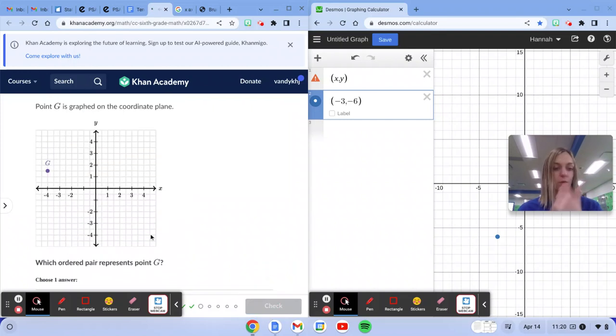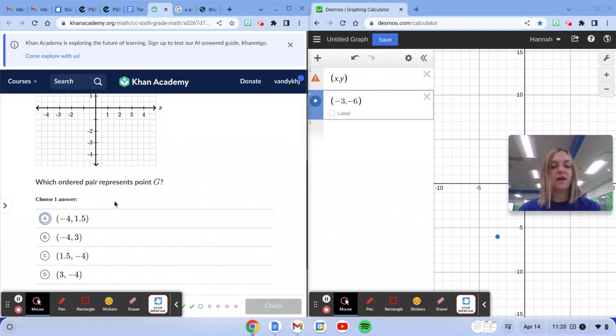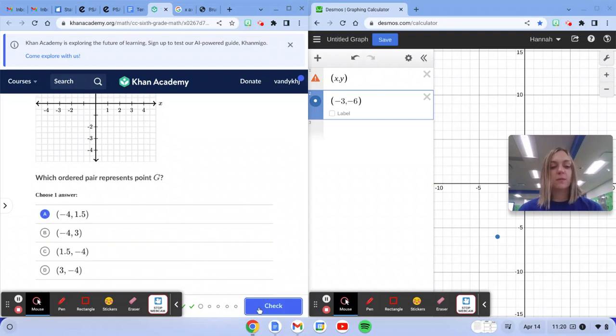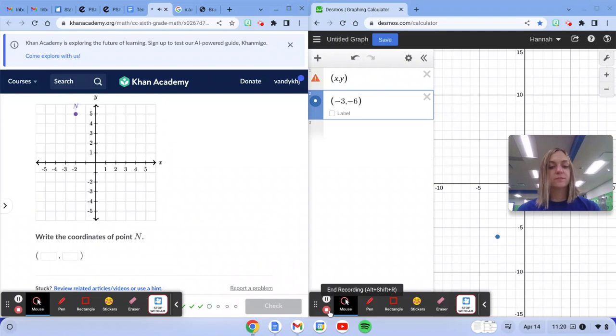Next, what ordered pair represents point G? We have to find the x value first, so negative 4, and then we see that y is in between 1 and 2, so it's 1.5. Negative 4 comma 1.5. Perfect.